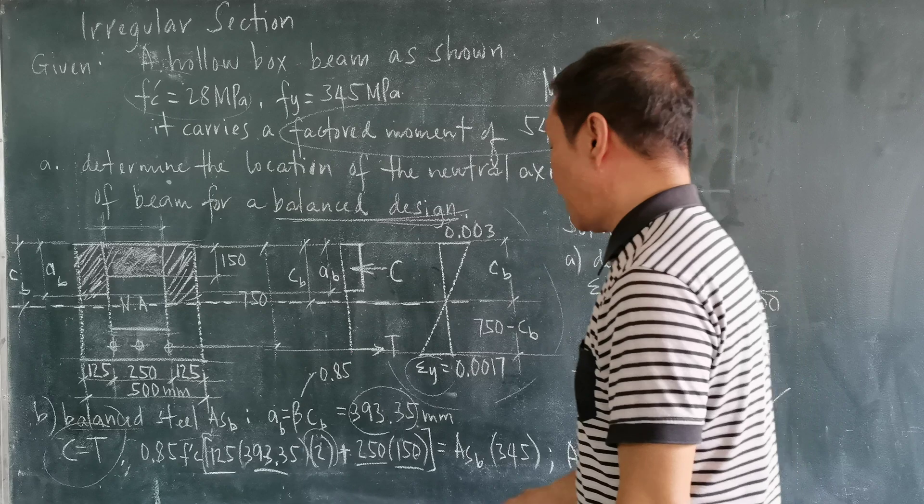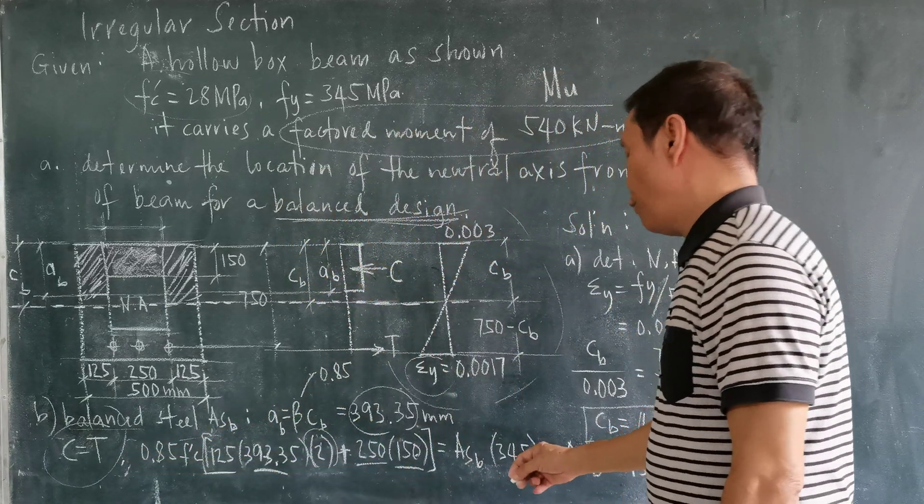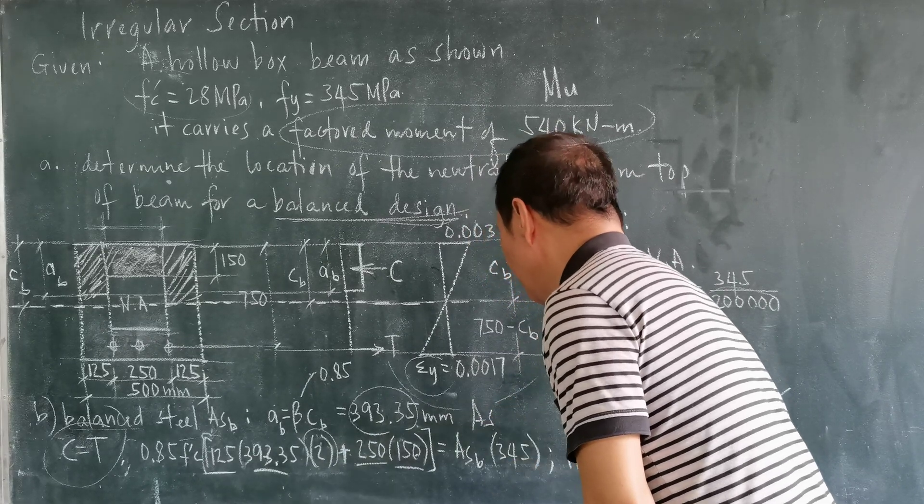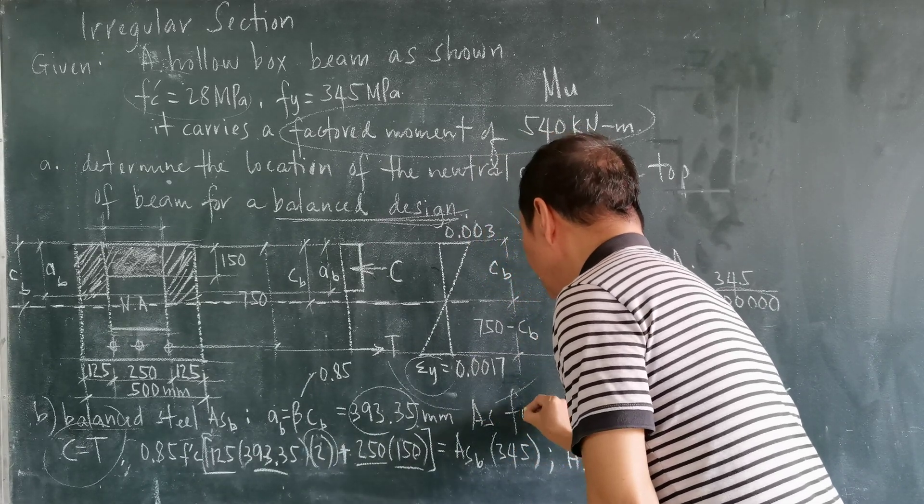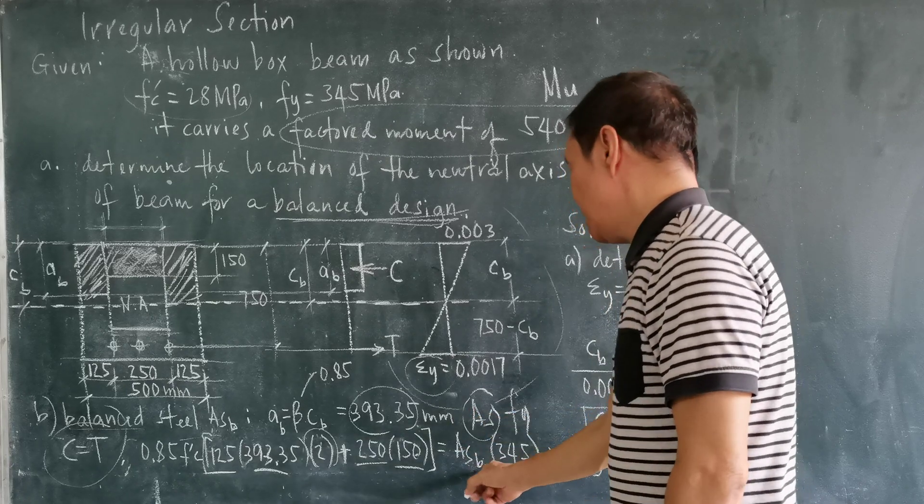And it is now equal to the tensile force, which equals the area of steel times FY. The original formula here is AS times FY, but this AS here is the balance steel area.